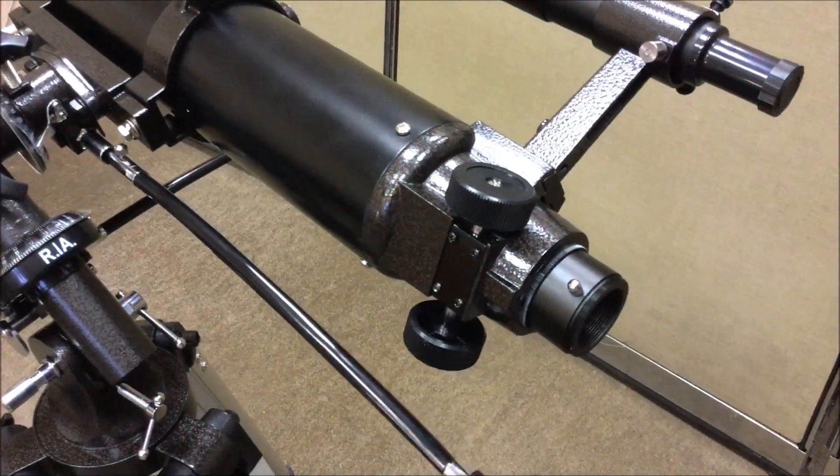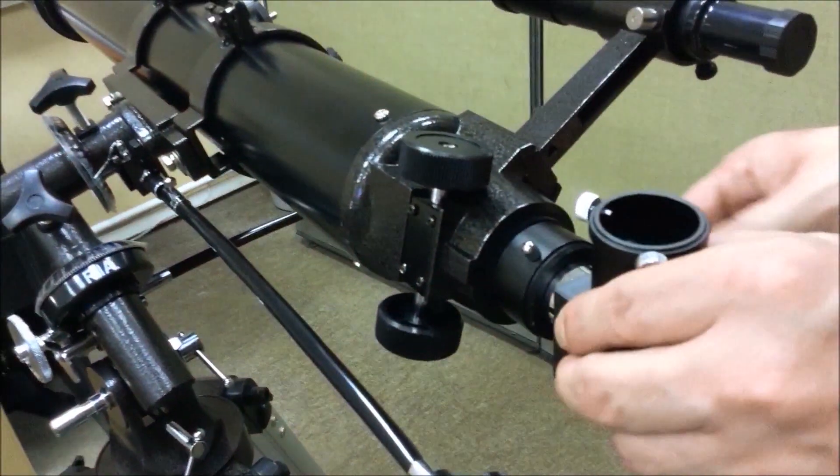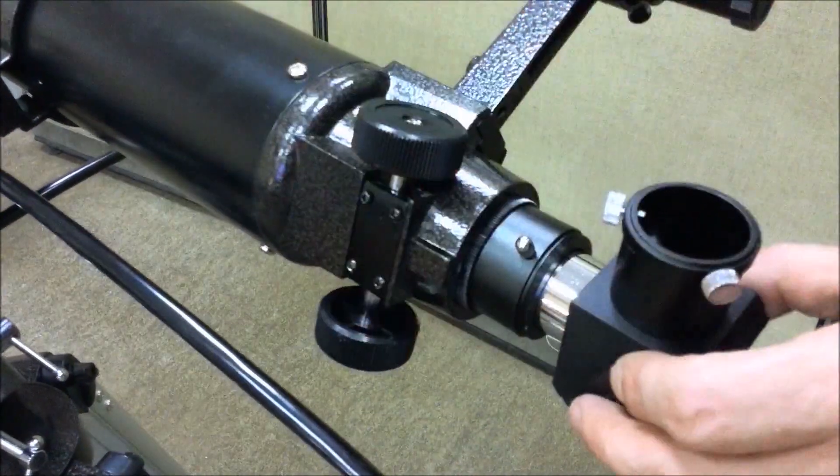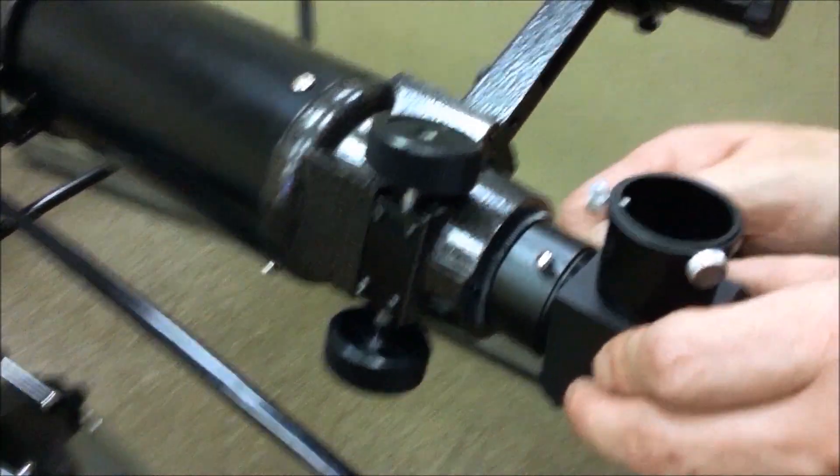Remove the protective cap from the focuser and insert the diagonal mirror into the focuser tube. If needed, slightly loosen the locking screws. Tighten the screws.